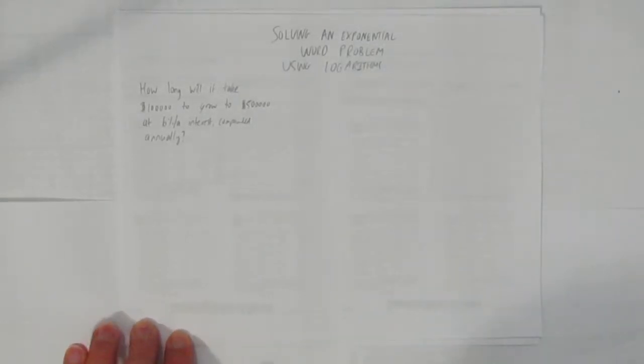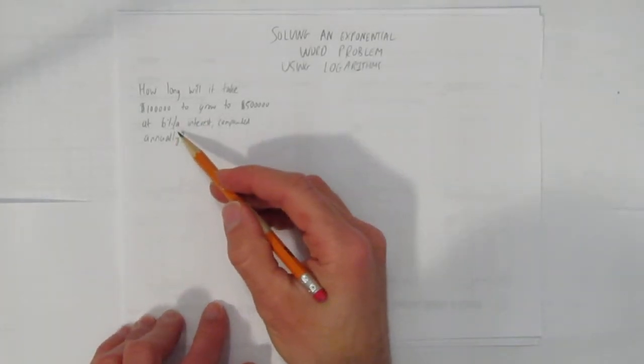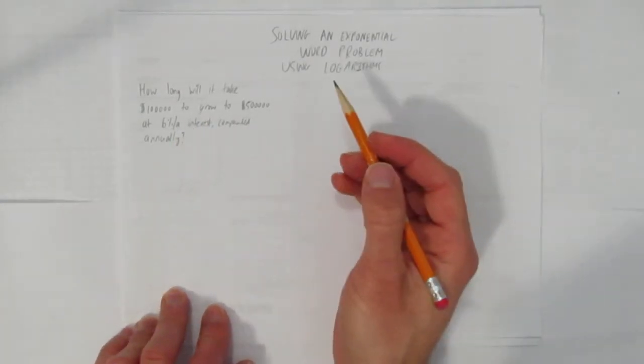The question is, how long will it take $100,000 to grow to $500,000 at 6% per annum, that's 6% per year interest, compounded annually?